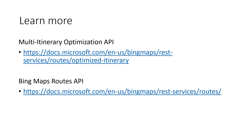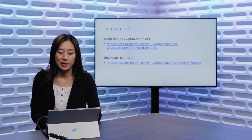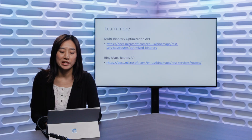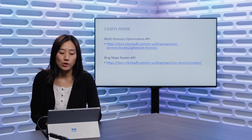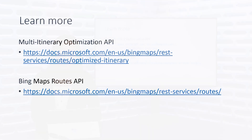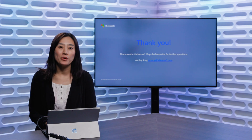That's all for the quick overview of the Multi-Itinerary Optimization API. For more information and the full request body examples of the API, please visit our API documentation page. You may also find information about our other route APIs such as Truck Routing API, Isochrone API, and Snap to Road API on our Bing Maps Route API page. Thank you and I hope you have a great Microsoft Build 2019.